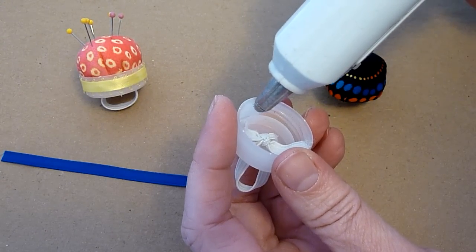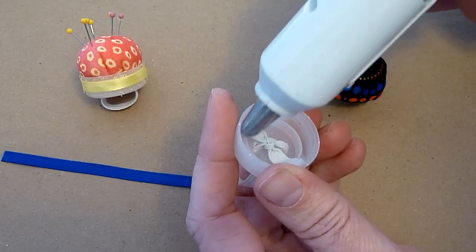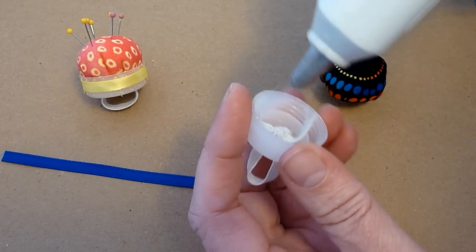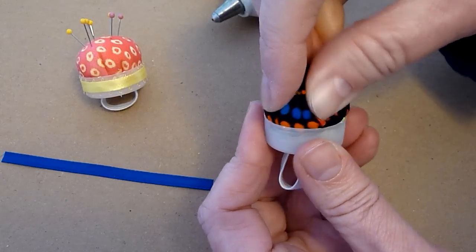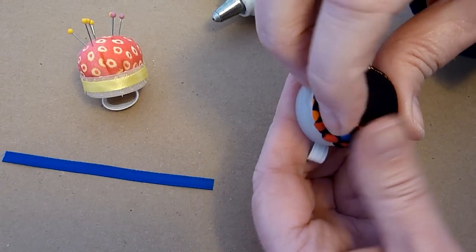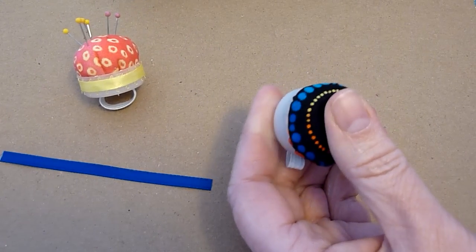What I'm going to do is I'm going to take the hot glue and I'm actually going to glue my elastic, and then I'm going to run a glue around the inside of the lid as well. Then you're going to stick this right down in there. Make sure it's centered the way you'd like it.